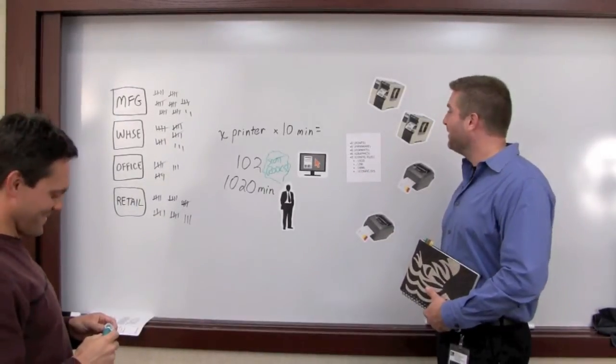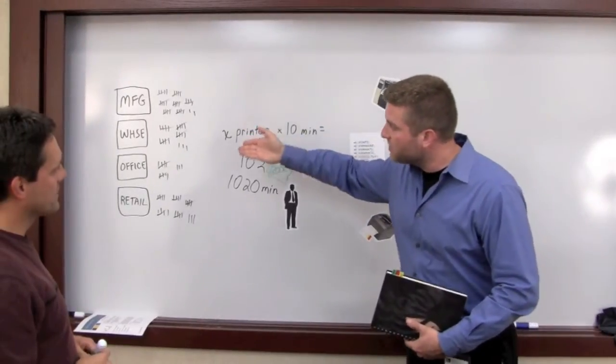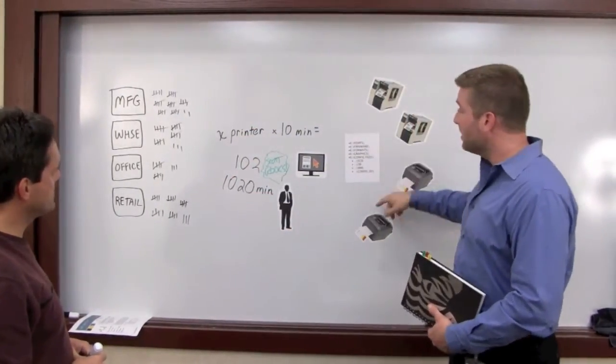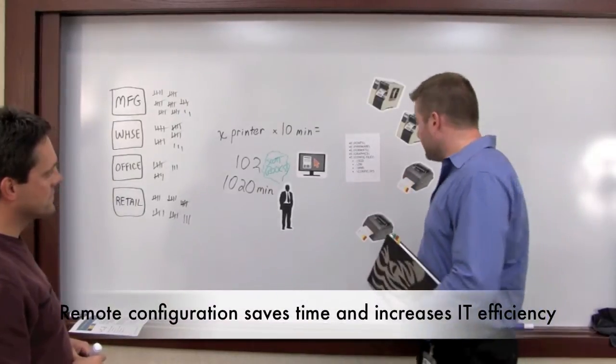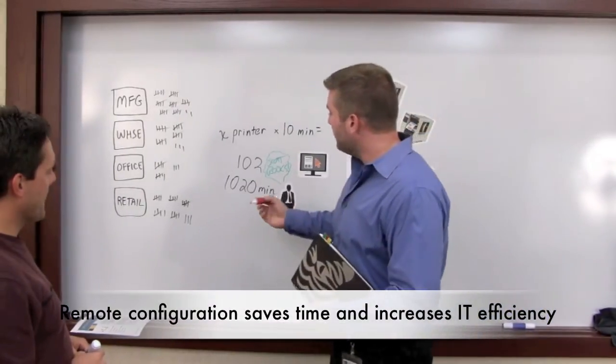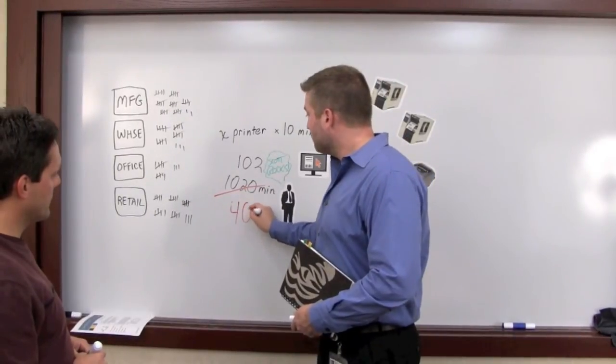Very nice. So this is going to cost you, let's say that you have a different set of files for each one of these locations, 10 minutes per location every quarter. So in the end, what you're looking at is instead of that thousand minutes per quarter, you're only spending 40 minutes per quarter.